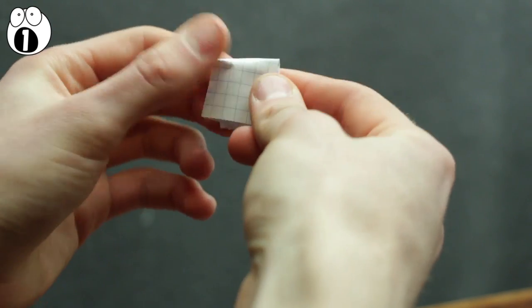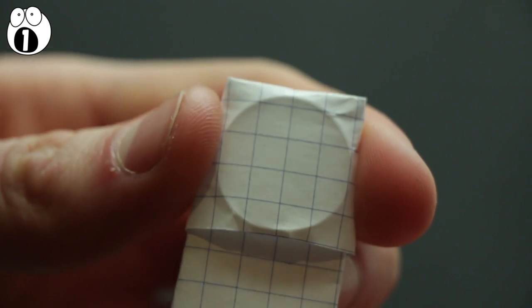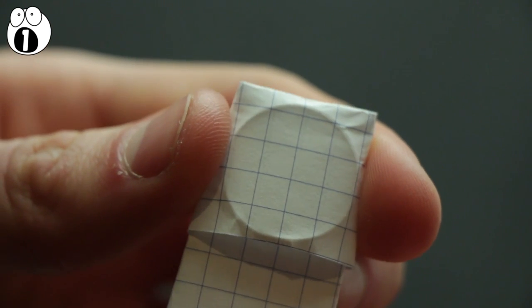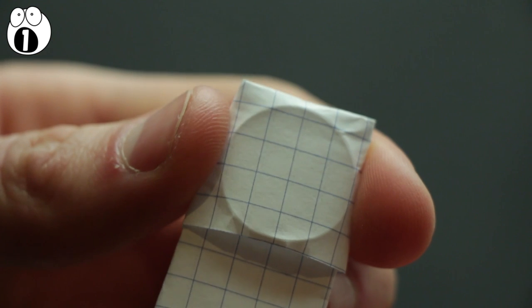To end the trick, cup your fingers around the coin and hold the paper. To make it look like the coin is still in the paper, just squeeze the coin to make the indent as the trick is being performed.